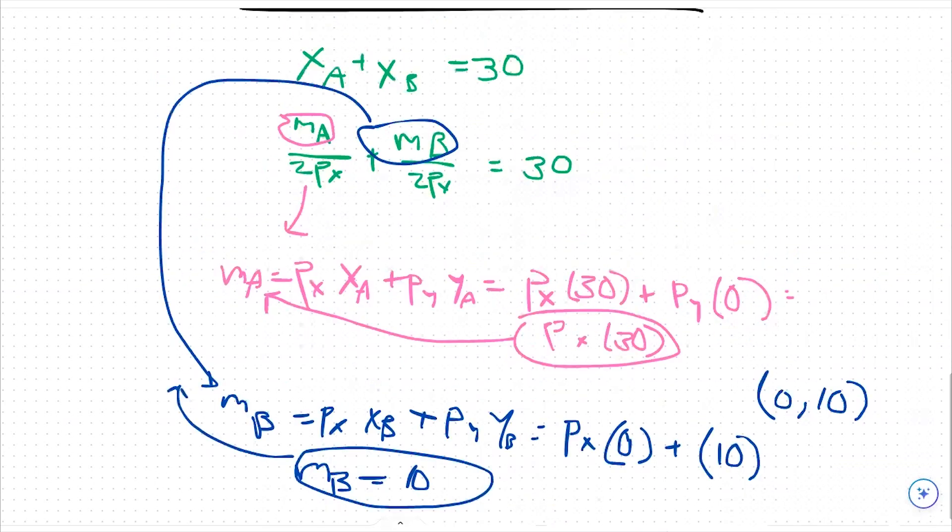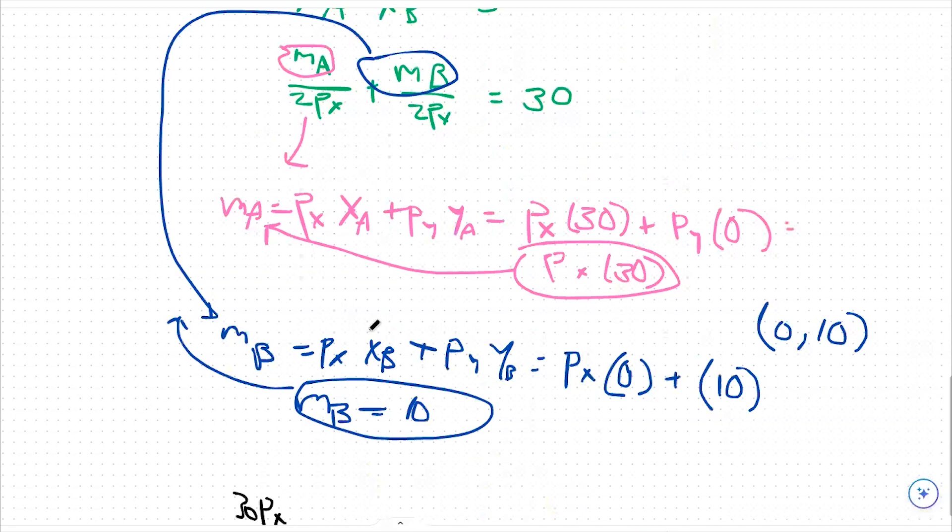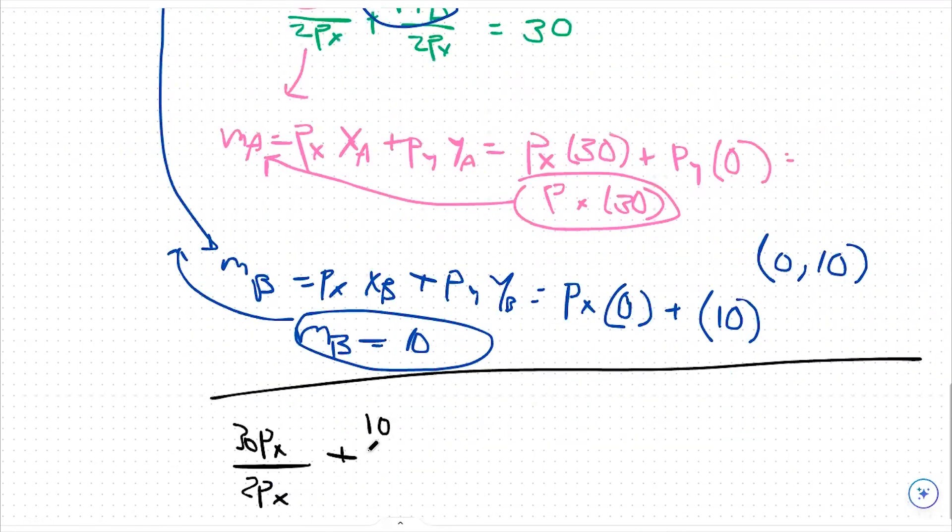So with this in mind, I'm going to replug everything back into that equation. And we're going to say 30 px, which is my income that we found for person A over 2px plus our MB of 10 over 2px equals our endowment of 30 total units of x.